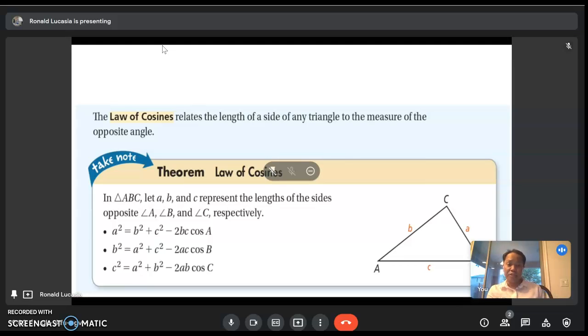We have formulas for the Law of Cosines. In triangle ABC, let a, b, and c represent the lengths of the sides opposite angle A, angle B, and angle C respectively.